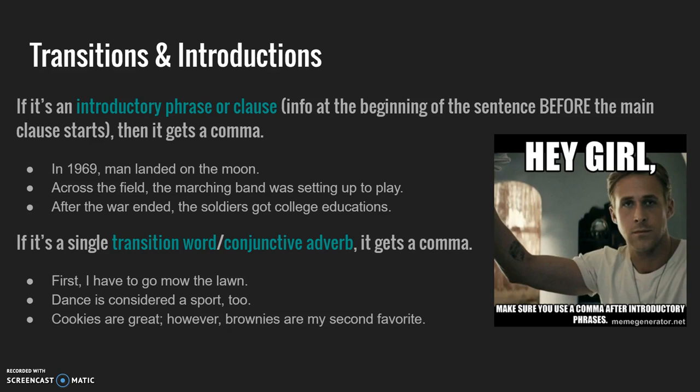If you've watched my semicolons video, you've already been introduced to conjunctive adverbs and how to pair them with a semicolon. You also get a comma anytime you use a single transition word or conjunctive adverb. For example: 'First, I have to go mow the lawn.' 'Dance is considered a sport too' — 'too' is an adverb there. Or: 'Cookies are great; however, brownies are my second favorite.' — a semicolon followed by the conjunctive adverb 'however' with a comma.